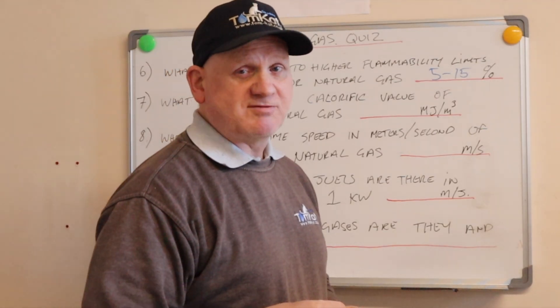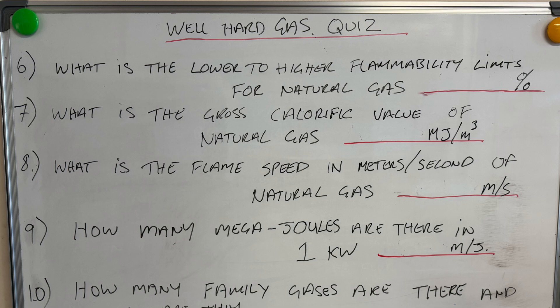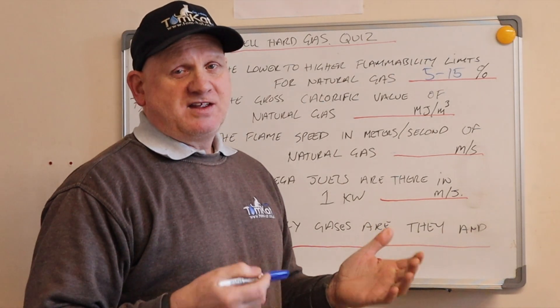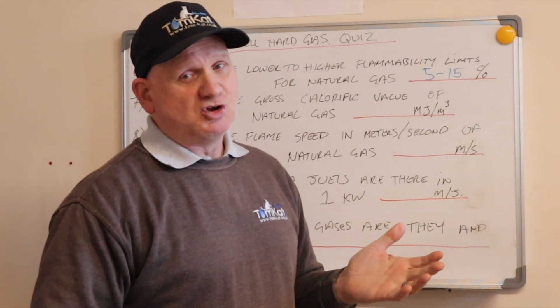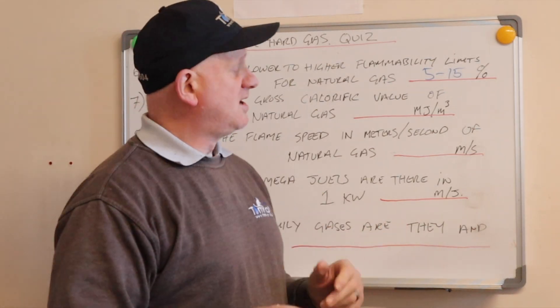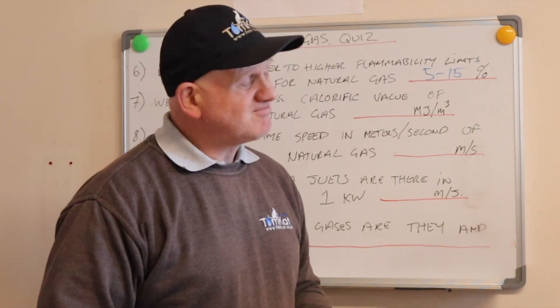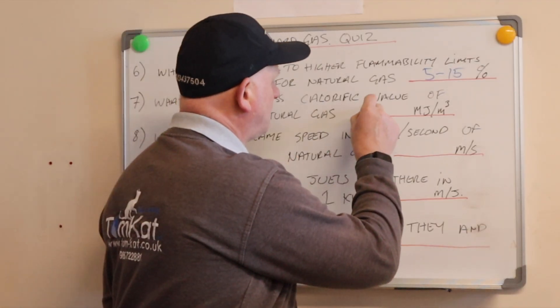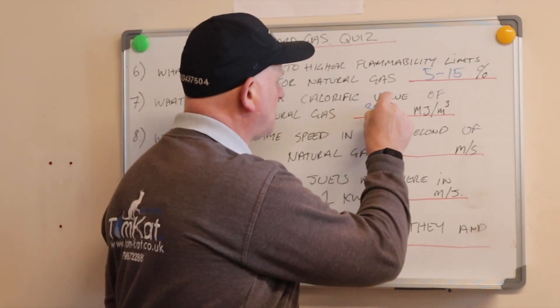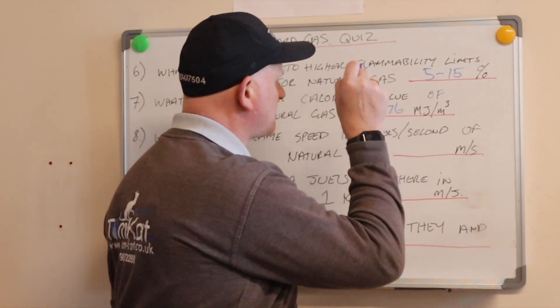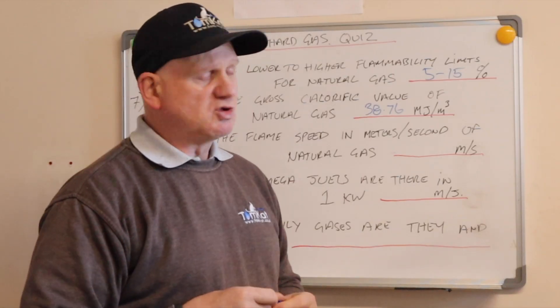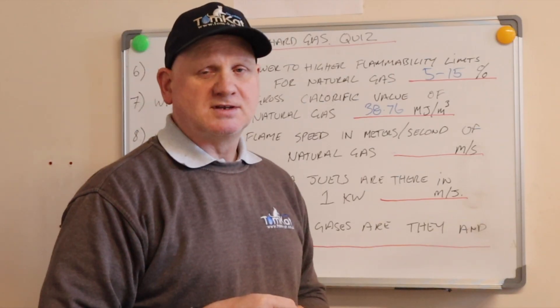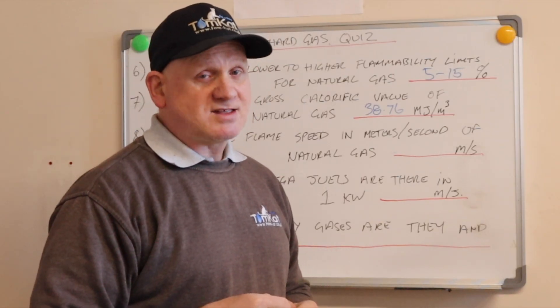Question number seven: what is the gross calorific value of natural gas? If you gas rate the way I show you, you'll know this. It's actually 38.76 megajoules per meters cubed.